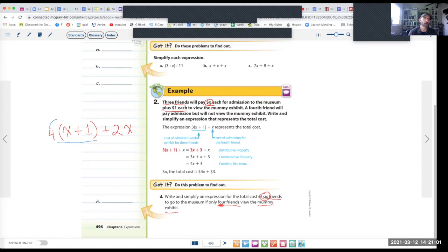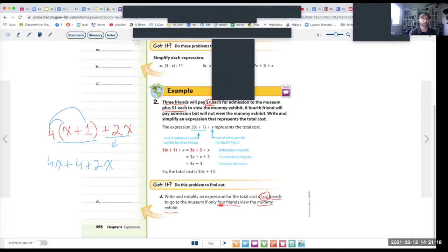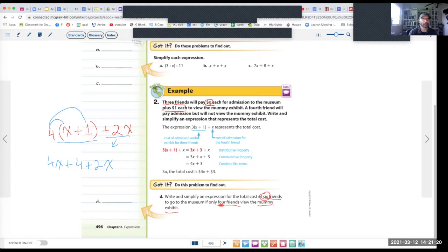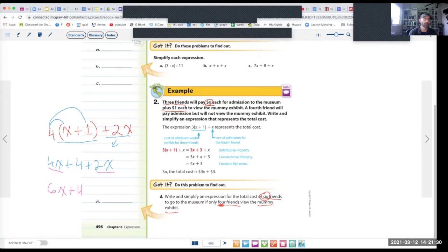All right, so what you should have done is 4 times x is 4x, plus 4 times 1 is 4, and then this part you're just going to bring it down, plus 2x. Great. Now what we have to do is we have to combine those terms. So I see we have a 4x and a 2x, which would be 6x, and the plus 4 just remains plus 4. So you should have 6x plus 4 dollars. The whole thing is dollars. All right, excellent.